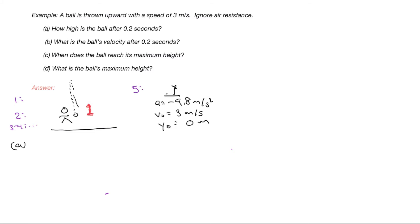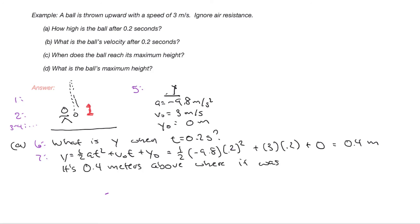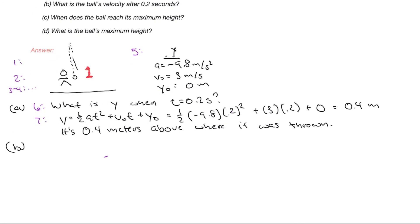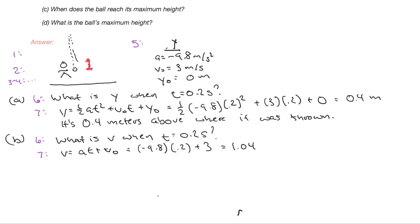In part A, I'm asked how high is the ball after 0.2 seconds? Translated into math: what is y when t equals 0.2 seconds? Using y equals one-half a t squared plus v-naught t plus y-naught, substituting in the given values, I solve and get 0.4 meters — so it is 0.4 meters above where it was thrown. In part B, I'm asking for the velocity at the same time. Using v equals at plus v-naught and plugging in values gives 1.04 meters per second.